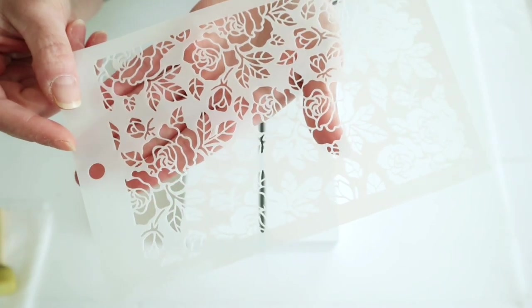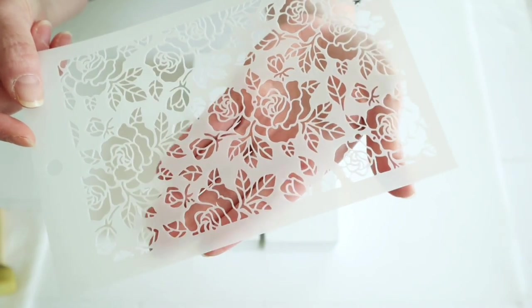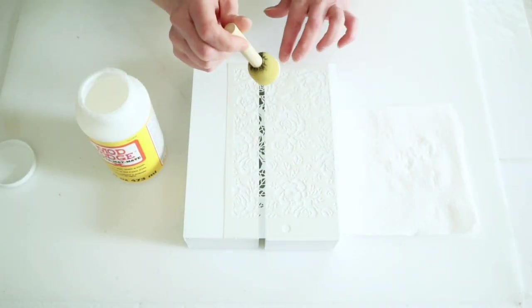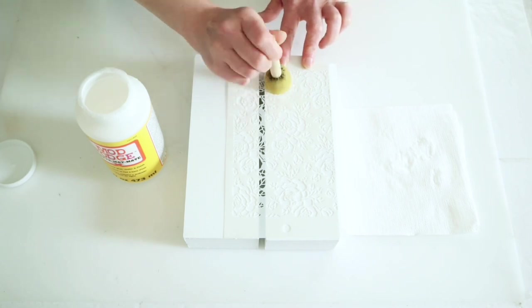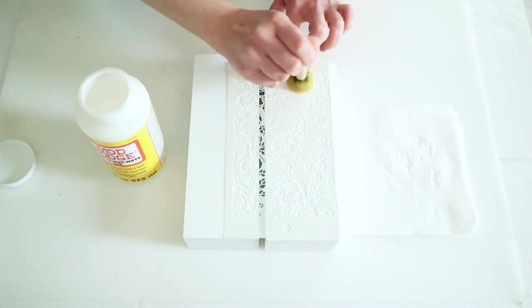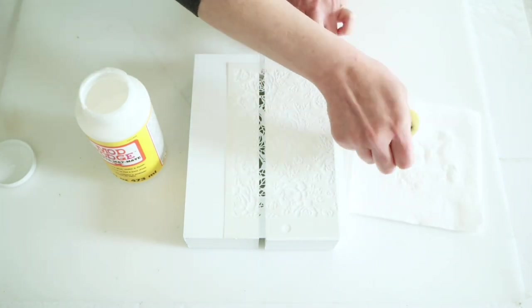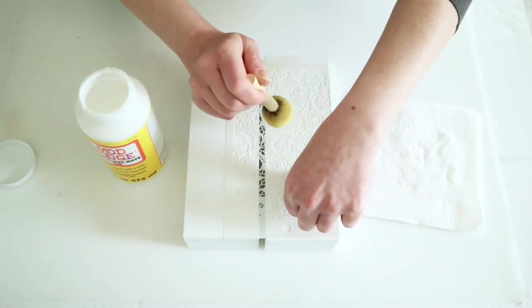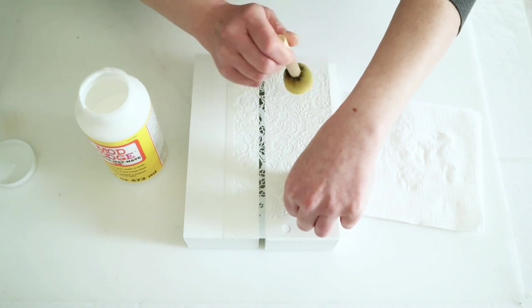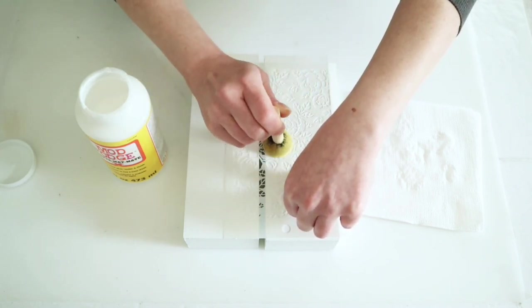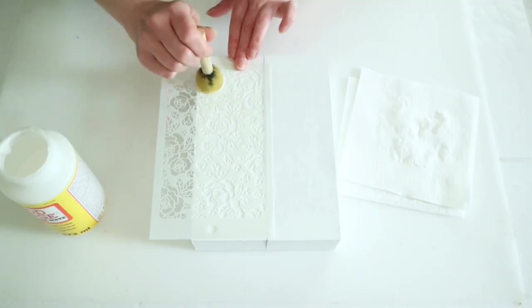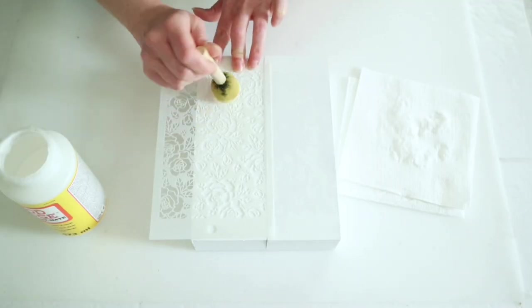Once those are dry, I'm trying a new technique—this is actually the first time I've done this. I'm using this really pretty rose stencil, and I'm taking some Mod Podge and dabbing it over top of my two wood pieces. I wasn't really sure how it was going to turn out, but I thought it would look like an impression or wood burning.